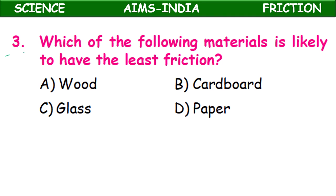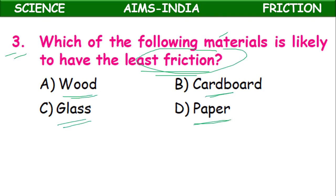Third question: Which of the following materials is likely to have the least friction — wood, cardboard, glass, or paper? If we compare the smoothness of all four materials, glass will be smoother than the remaining three. So glass will show the least friction compared to the others.